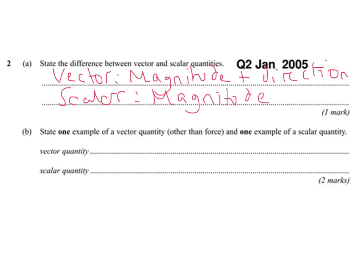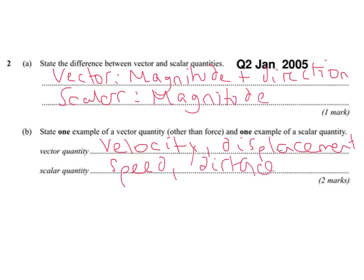So an example of a vector quantity, I mean there's loads we could give. So we're looking at velocity, displacement. Oops, that's gone horribly wrong. Displacement. And obviously the scalar quantities of those would be speed and distance. Okay, that's not the neatest handwriting, but I think those are nice and simple anyway. Okay, so let's move on to the harder part of the question.